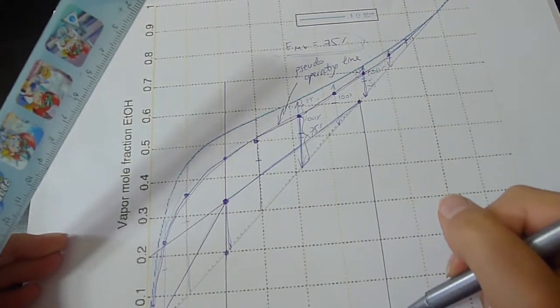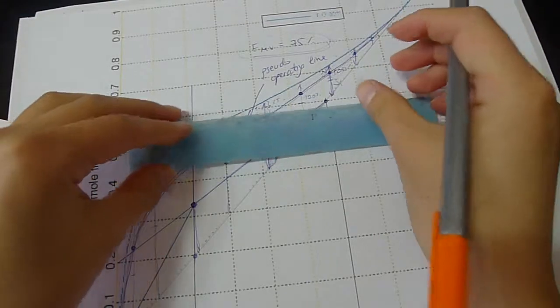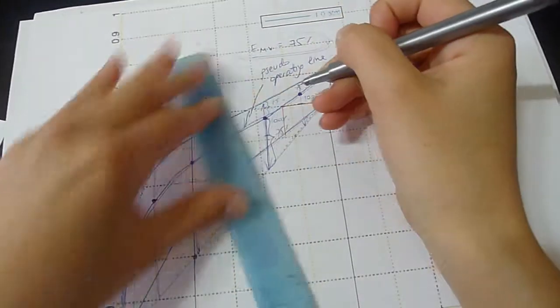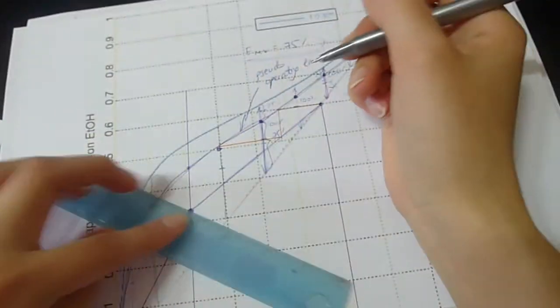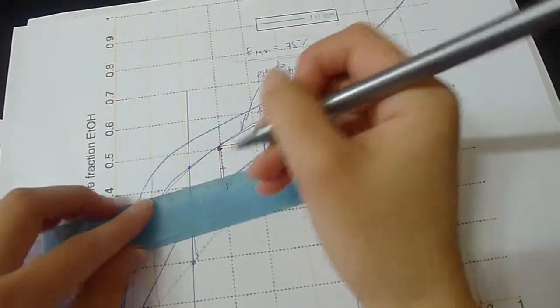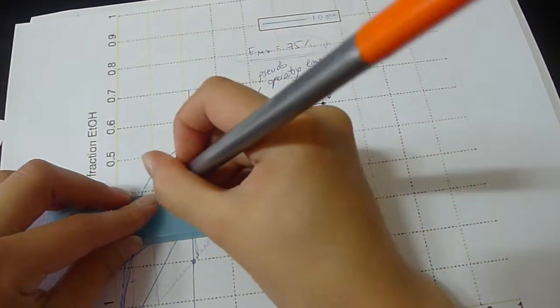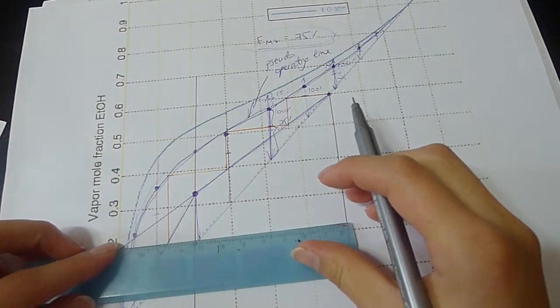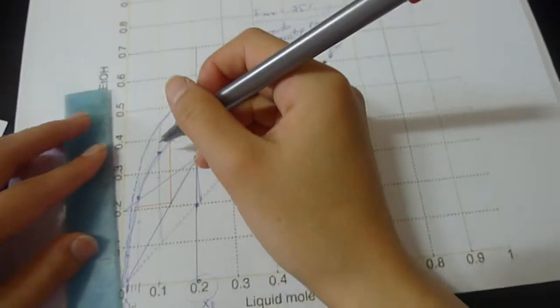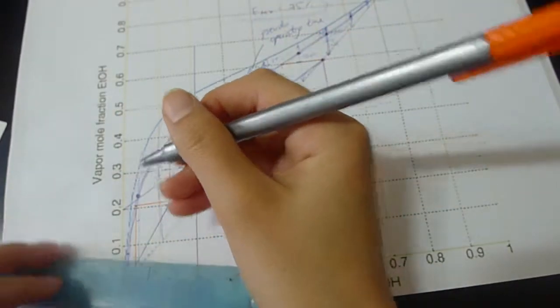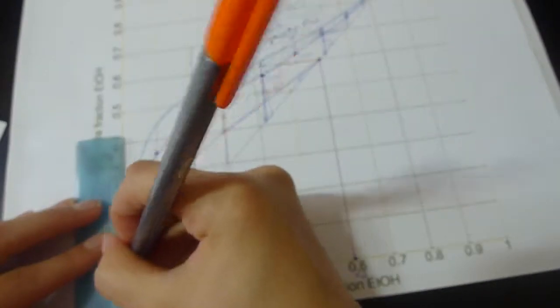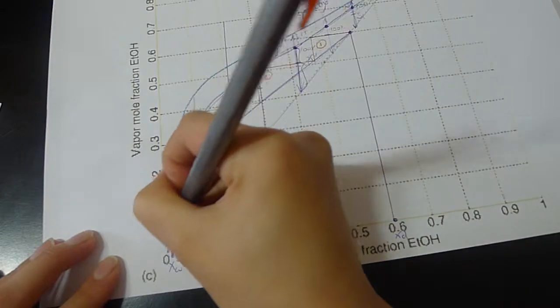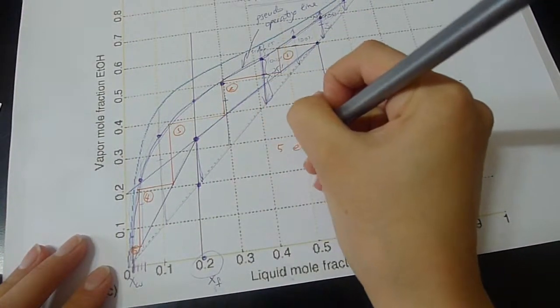So our feed starts at 0.6. So now we have to draw our trace stages. So now we count the trays 1, 2, 3, 4, 5. So 5 equilibrium stages.